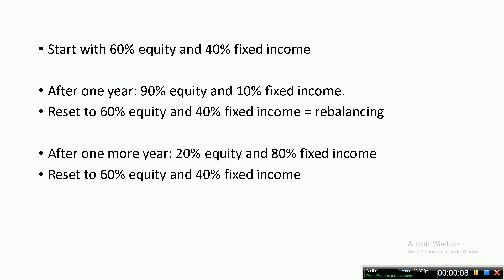Let's say I start with 60% equity in my portfolio and 40% fixed income. After one year, I get a terrific year in equity and the 60% grows to 90%, and I have only 10% of fixed income. Rebalancing essentially means I reset my portfolio back to 60% equity and 40% fixed income — I take out some gains from equity and shift it to fixed income, preserving that gain.